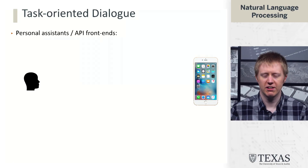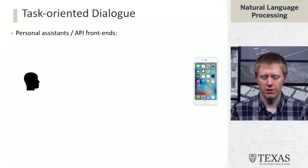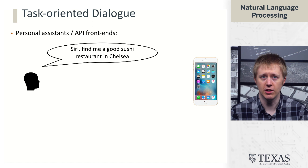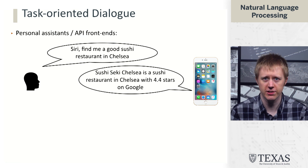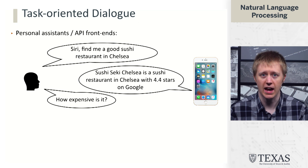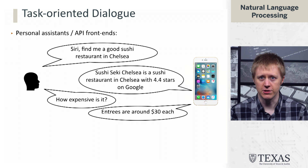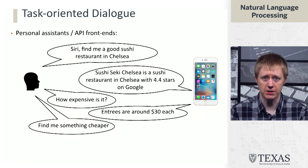This comes back to ideas that we invoked at the very beginning of the course — the idea of having a conversation with Siri. We often want to talk to these personal assistants, basically API front ends, and ask questions like 'find me a good sushi restaurant in Chelsea.' Hopefully Siri would say something like 'Sushi Seki Chelsea is a sushi restaurant in Chelsea with 4.4 stars on Google,' and then you can ask follow-up questions like 'how expensive is it?' Entries are around $30 each, and then you might say 'find me something cheaper.'